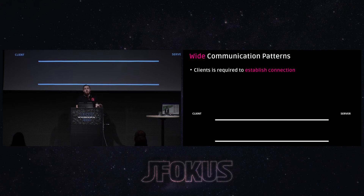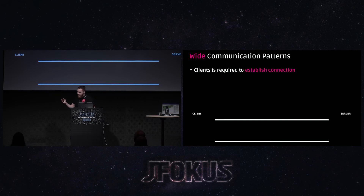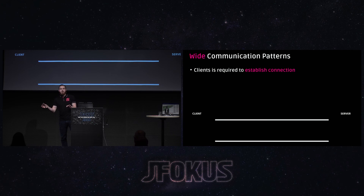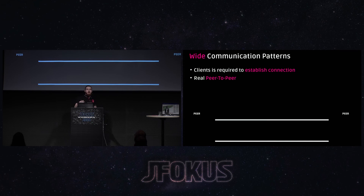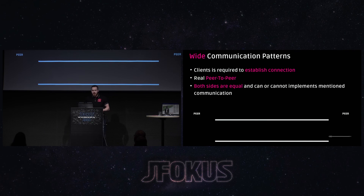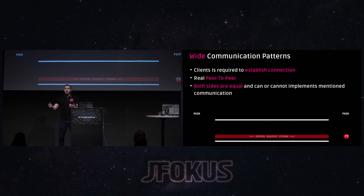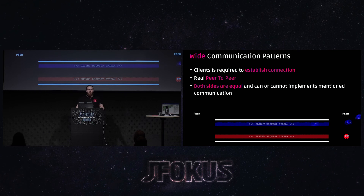Remember that in HTTP we have client-server communication. In RSocket, we have client and server only to create the initial single connection — that's the only time we have that distinction. After that, we have peer-to-peer communication: both the client and server can be the responder to any request, with no constraints. Any one of them can request data from the other.